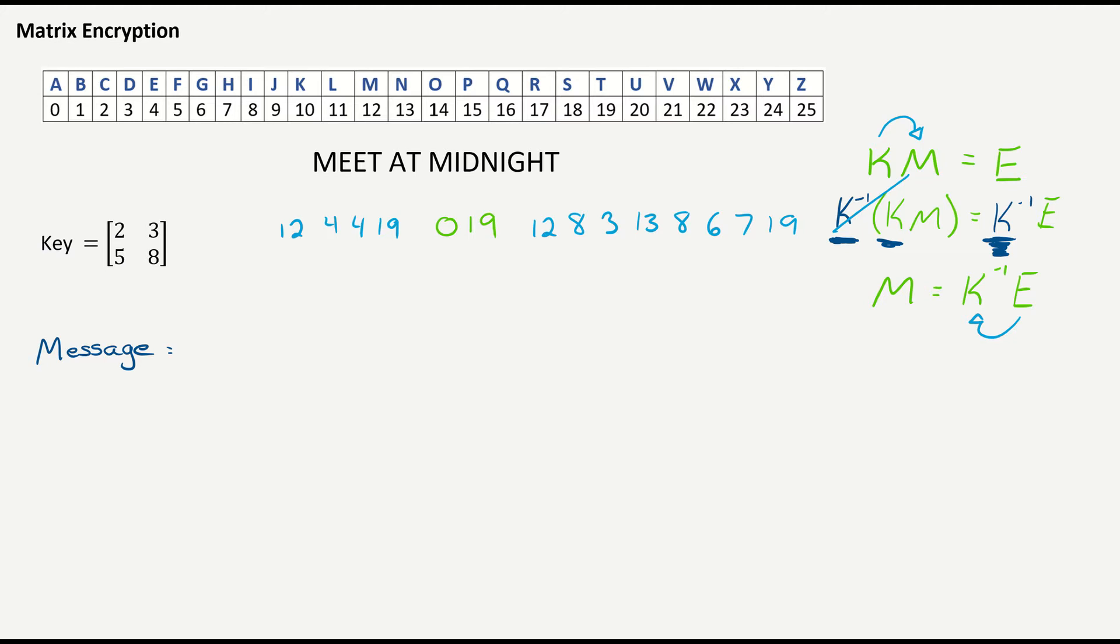Now we need to put that in the message matrix, which just means organize those numbers into a matrix. Right now we're practicing encryption with a two by two key. You can do this with a three by three, a four by four, five by five, whatever square matrix you want. It has to be square because in order to decrypt the message, we have to find the inverse, and there are only inverse matrices of square matrices.